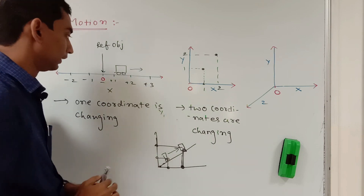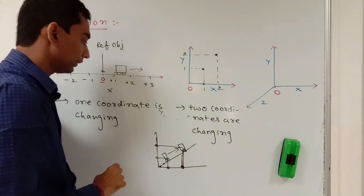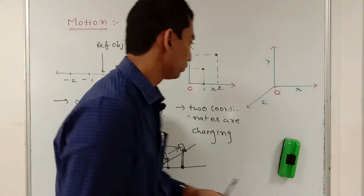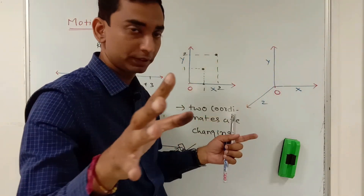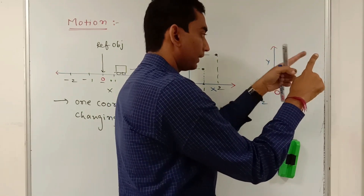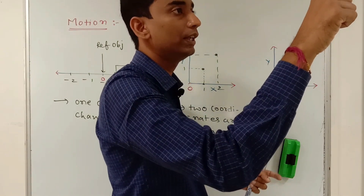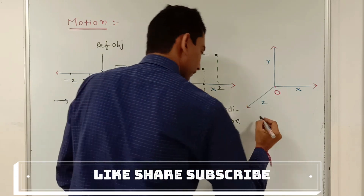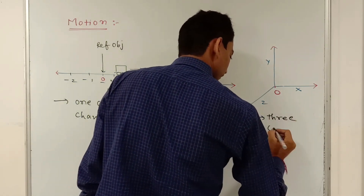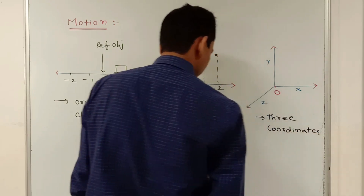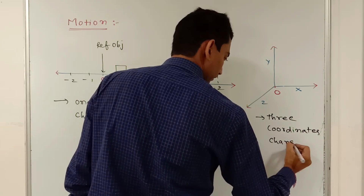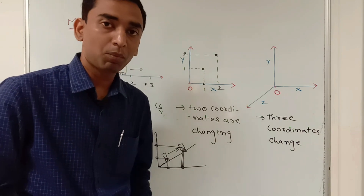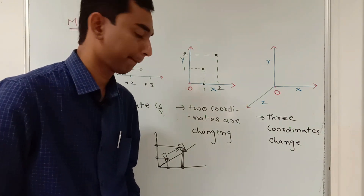If a car is going along purely the east direction, that is called motion in one dimension. In three-dimensional motion, take a fly moving anywhere in space. Suppose the fly was at one point with some finite distance from x, y, and z, and when the fly reaches another point, all three quantities x, y, and z are changing. So if all three coordinates x, y, and z are changing, the motion of the body is referred to as three-dimensional motion.